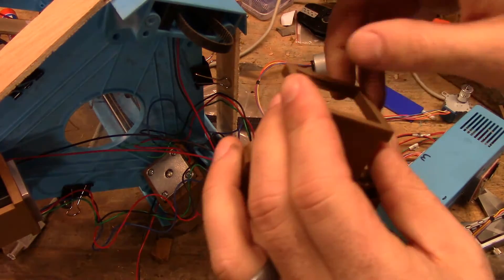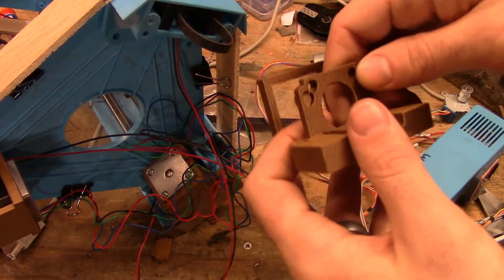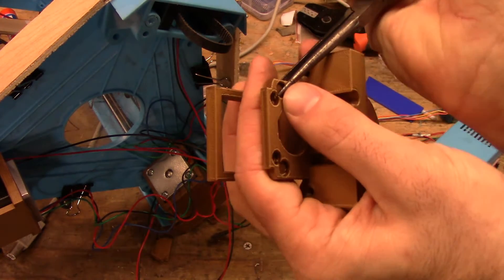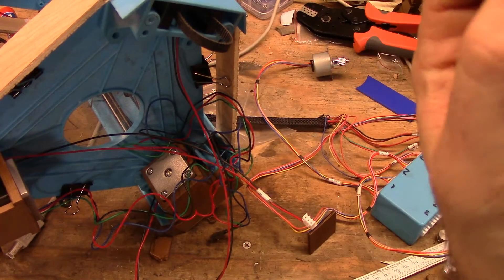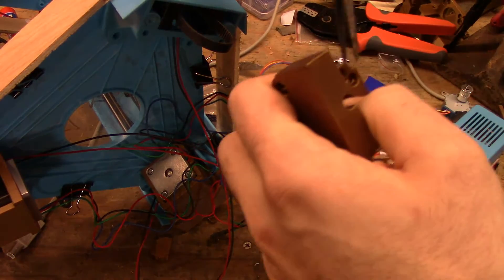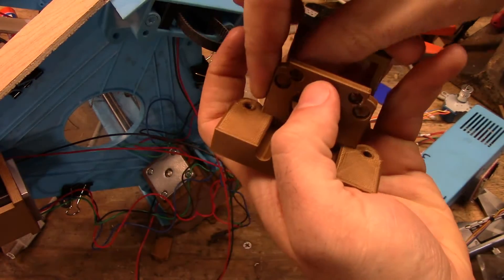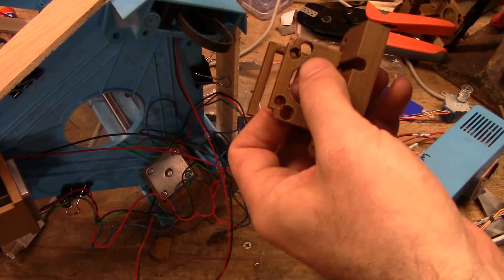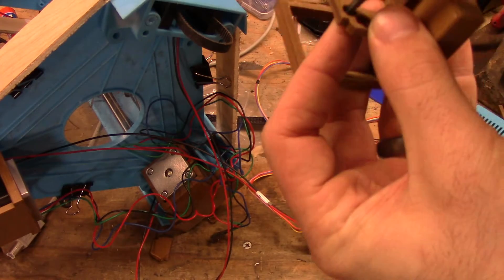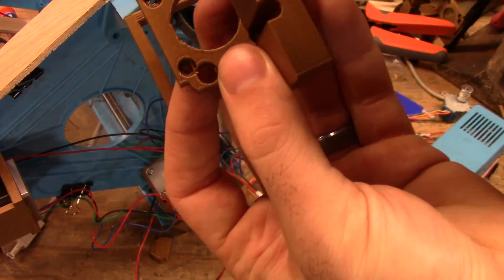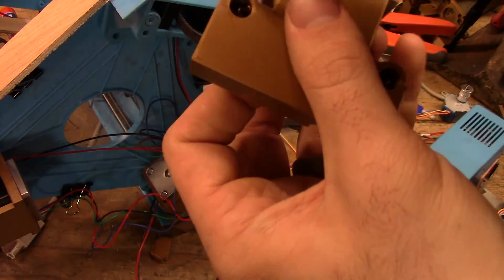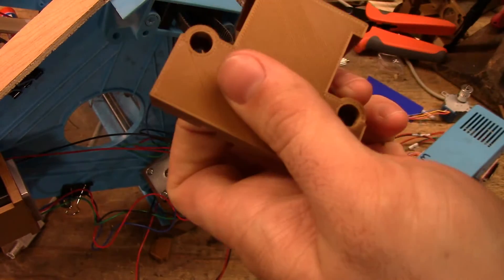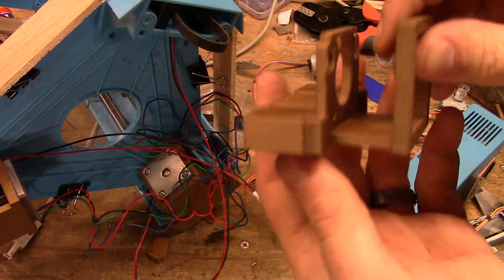I print mine with support because otherwise the sags and stuff will be even more extreme. It's pretty close to a press fit. I just use pliers to twist it out. Just clean up the other spots. These holes don't get support because they're a pain to get them out. It doesn't really matter.